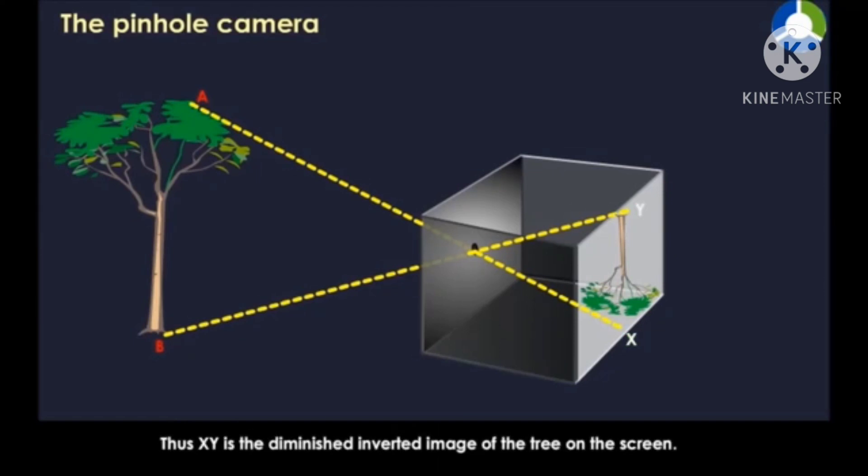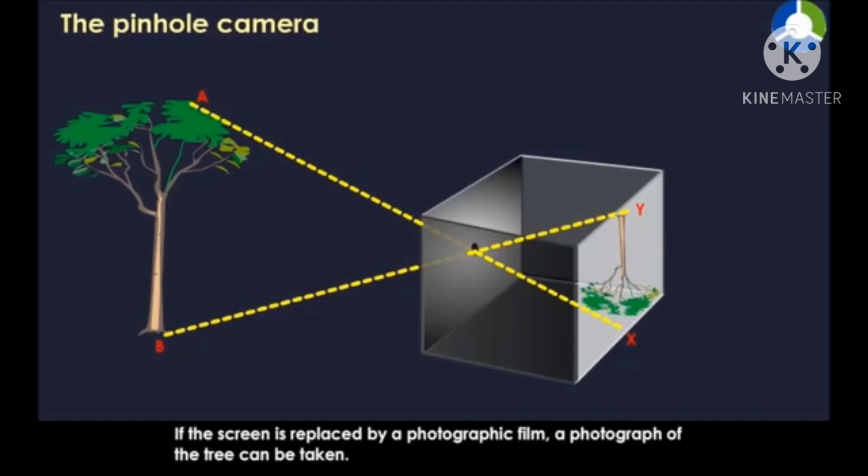Thus, XY is the diminished inverted image of the tree on the screen. If the hole is larger than a pinhole, the image obtained will be blurred.